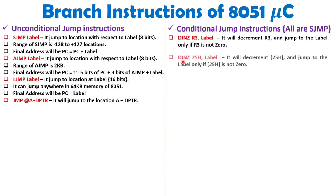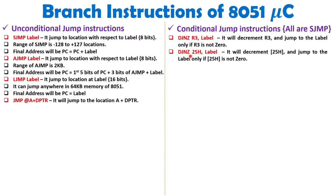When you execute DJNZ 25H, label, the value 25H is a location in the internal RAM of 8051. So at that location, whatever data is there, it will be decremented, and you will jump only if that value at this location is not 0.